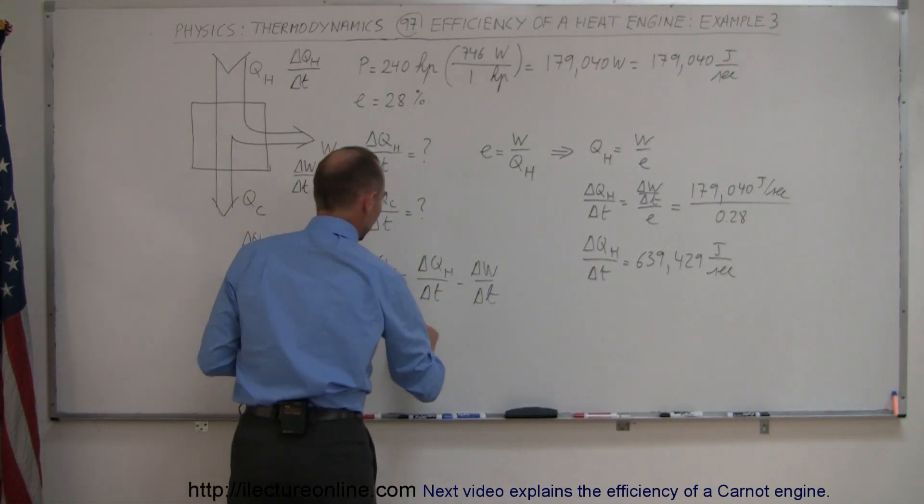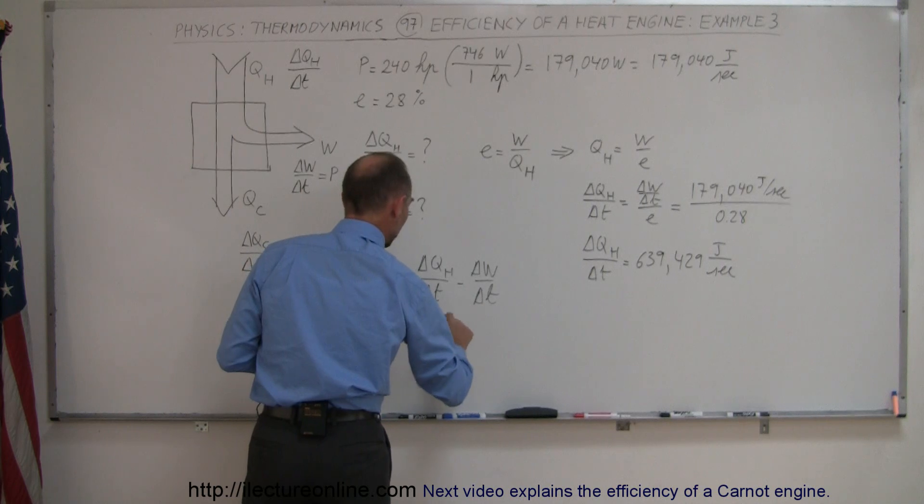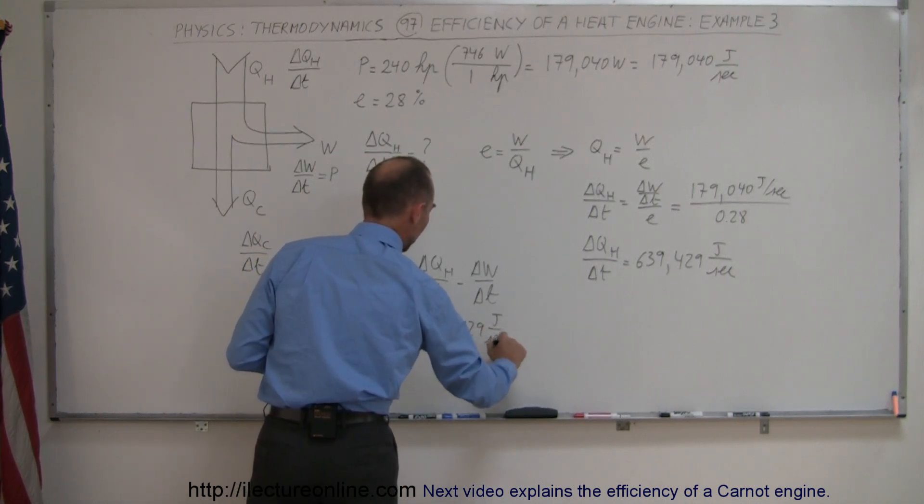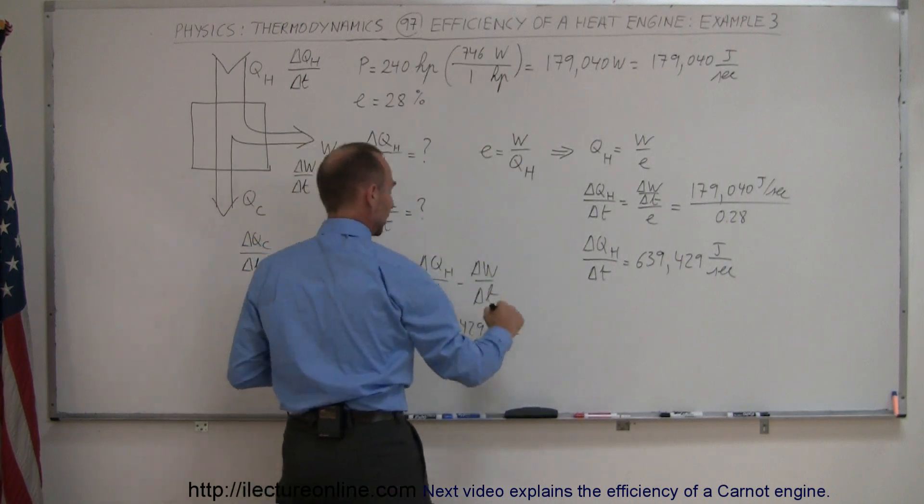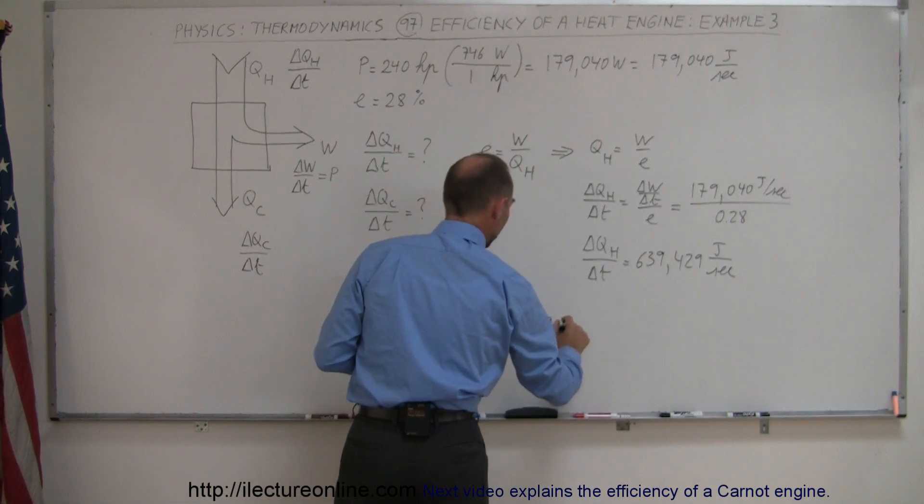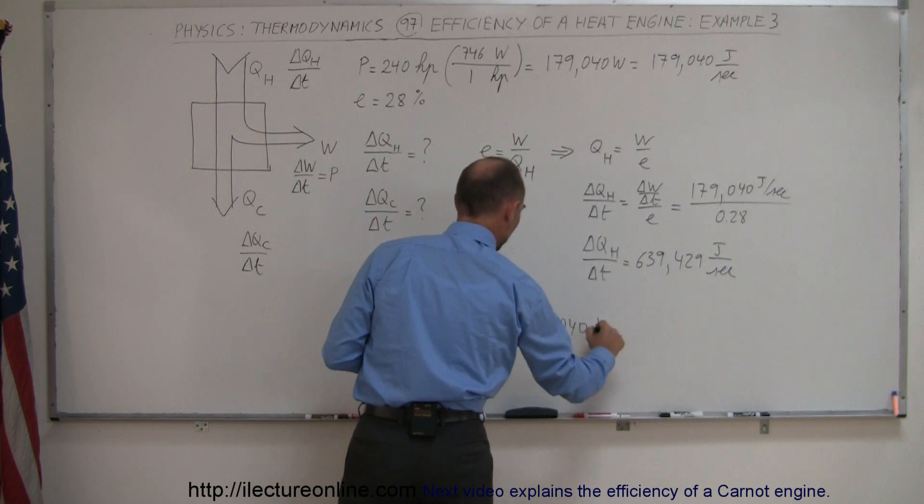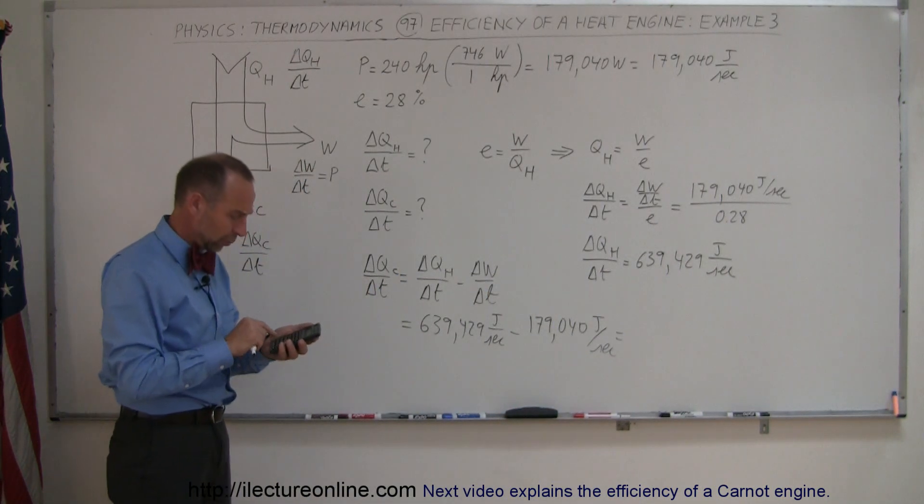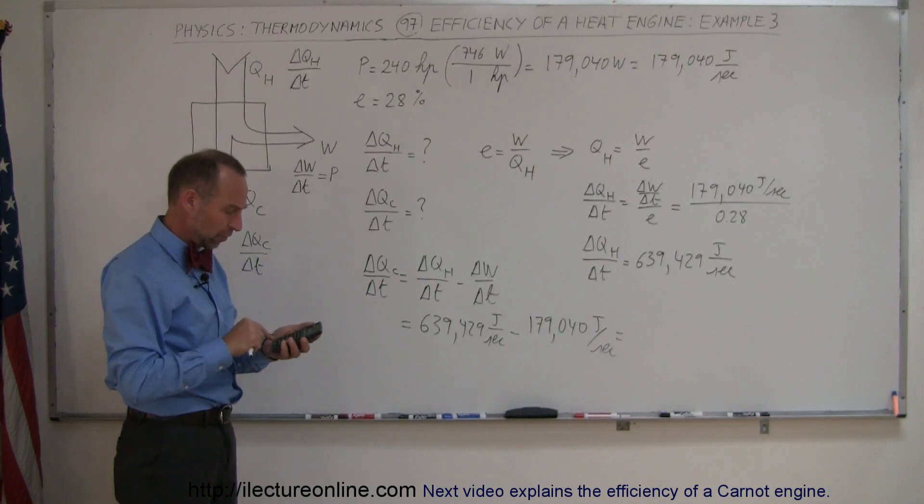And so what we can do there is we say okay that's equal to the 639,429 joules per second minus the work done per unit time, which is 179,040 joules per second. And so the difference between those two, so minus 179,040 equals,